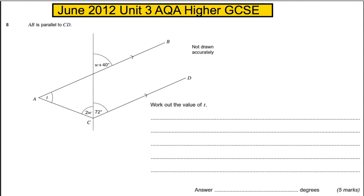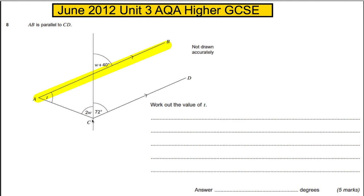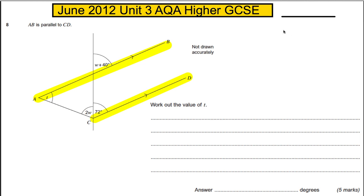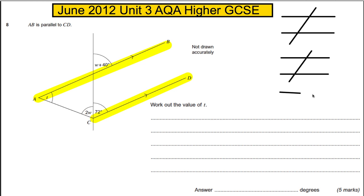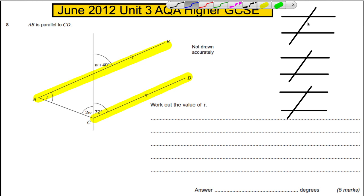Here is the question. It tells you AB is parallel to CD, so these two lines are the parallel lines. When you think of parallel lines, you should be thinking of the following three rules. In the exam, you might want to draw these out so you have the ideas in your head that you're playing around with.